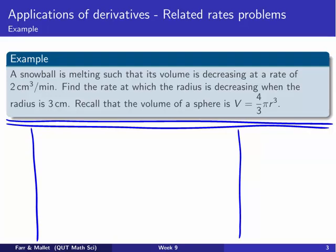Our first example, we've got a snowball that's melting such that its volume decreases at a given rate, 2 cubic centimeters per minute. We're asked to find the rate, so the result here is going to be a rate, not just some quantity. We need to find the rate at which the radius is decreasing, so the rate of change of the radius when the given radius is 3 centimeters. And we're given an extra little bit of information to recall that the volume of a sphere, we're going to assume that the snowball is a sphere, is given by 4 thirds pi times the radius cubed. So maybe pause the video for a minute and re-read that question just so you've got it straight in your head.